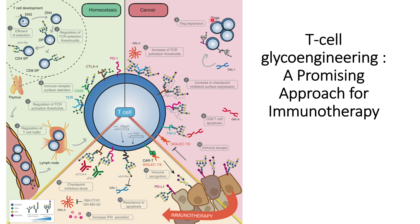Simultaneously, galectin-1 binds to T regulatory cells and increases their numbers, leading to suppression of T cell activation. Galectin-9 binds to T cells and promotes apoptosis of CD8-positive T cells. Additionally, inhibition of Siglec-7/9 suppresses immune efficiency and proper immune surveillance, further raising the activation threshold around the tumor microenvironment.